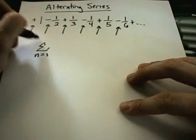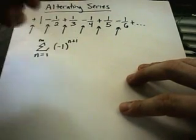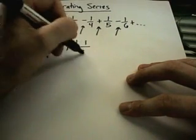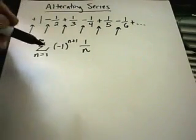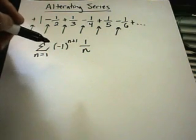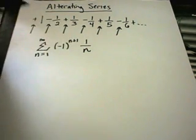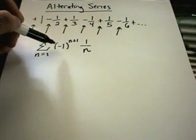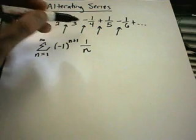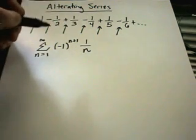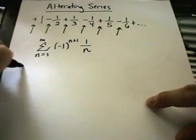I could write this series compactly as negative 1 to the n plus 1 of 1 over n. The thing to look for that will help you spot an alternating series will be a negative 1 basically to a power. You should convince yourself if you start writing out terms that you will in fact get a series where the signs alternate back and forth. If not, you can't do what we're about to do.